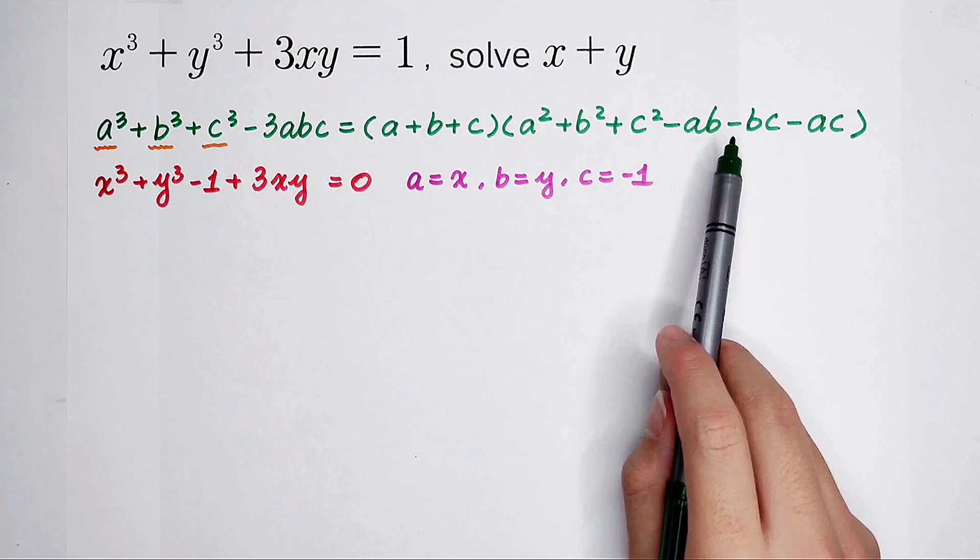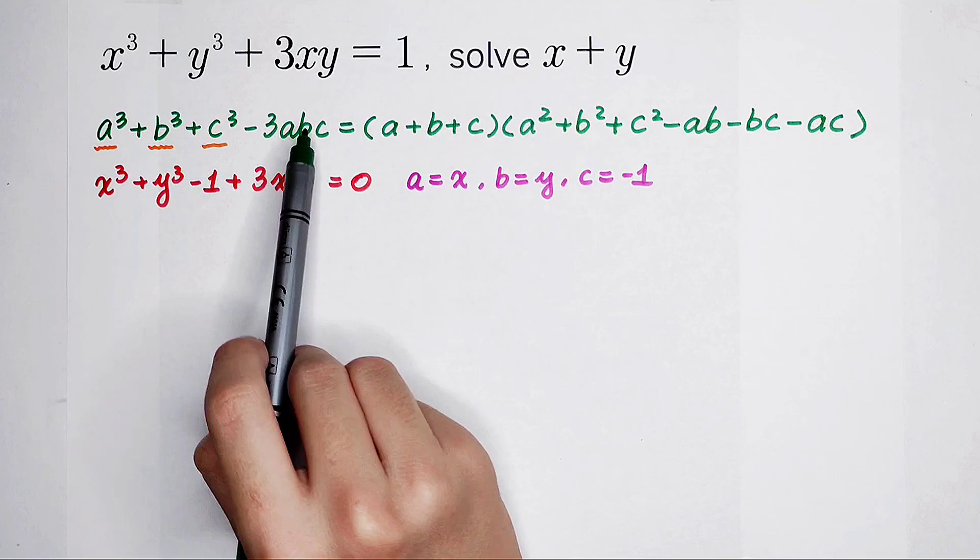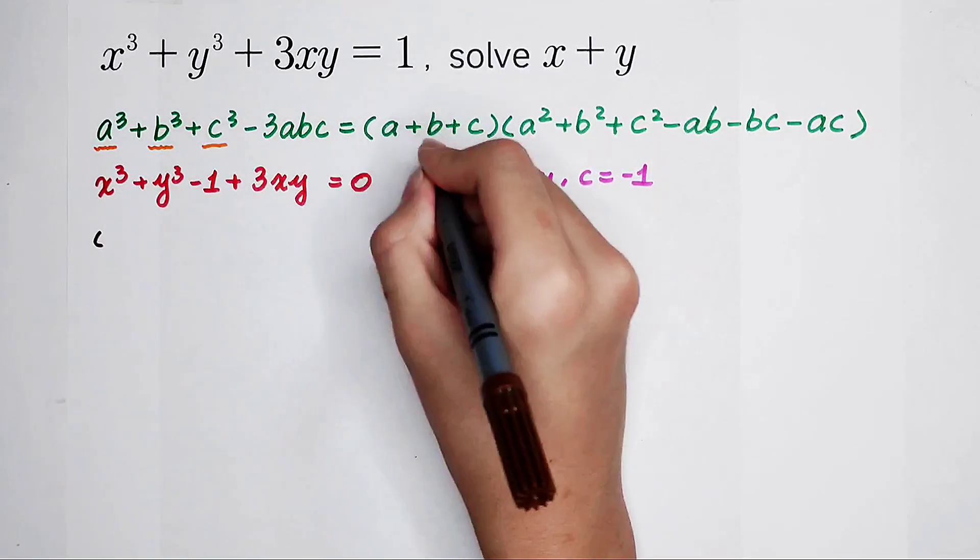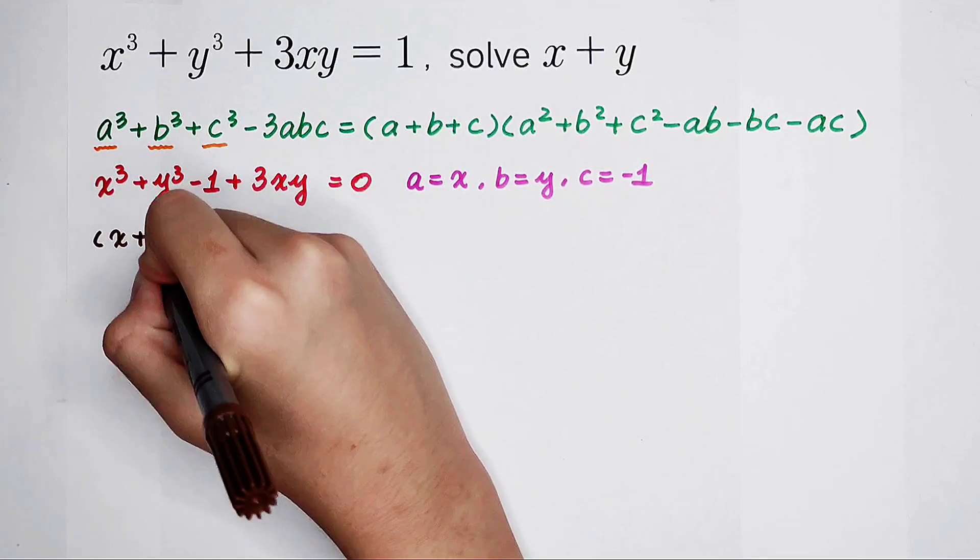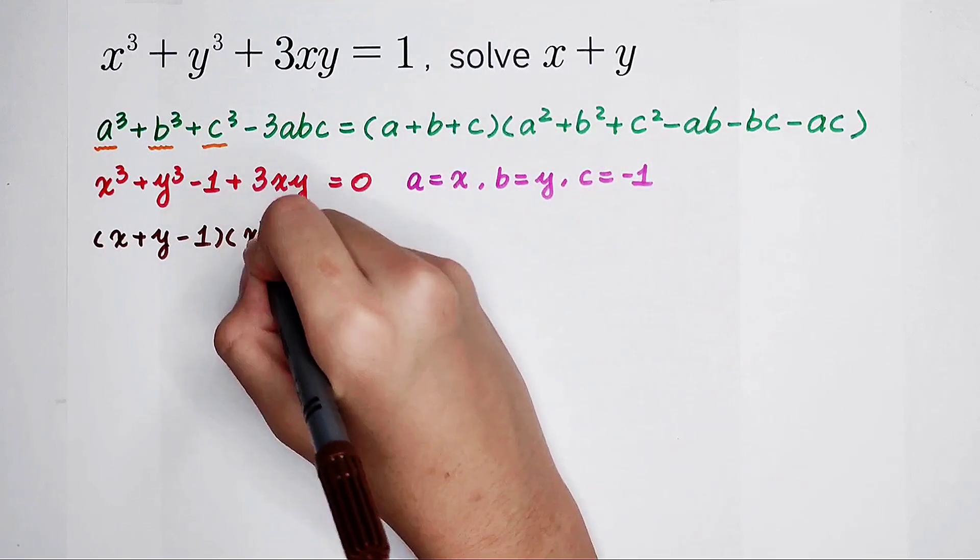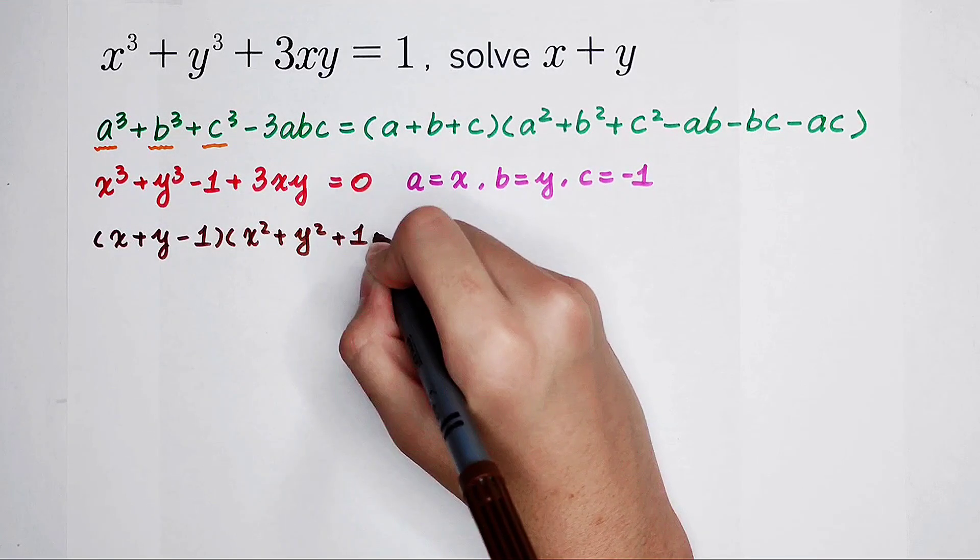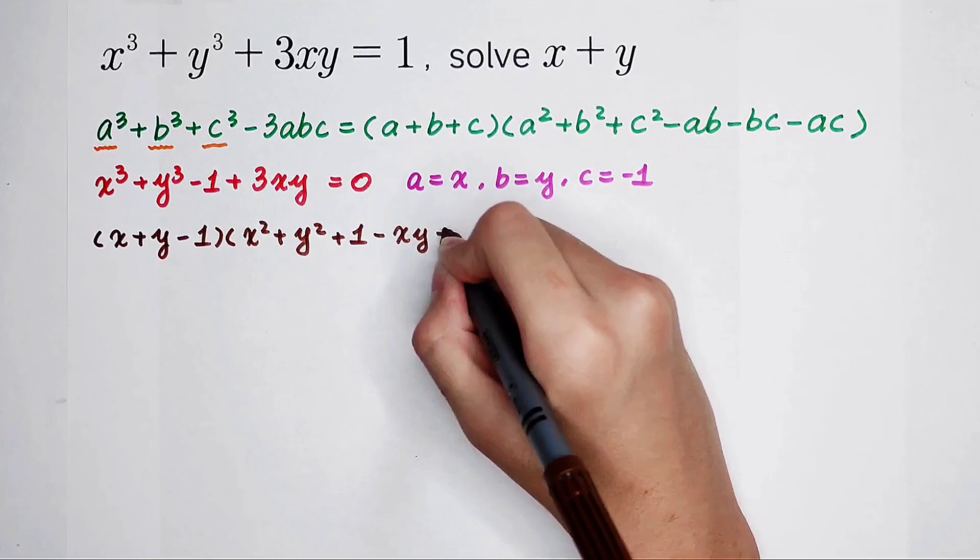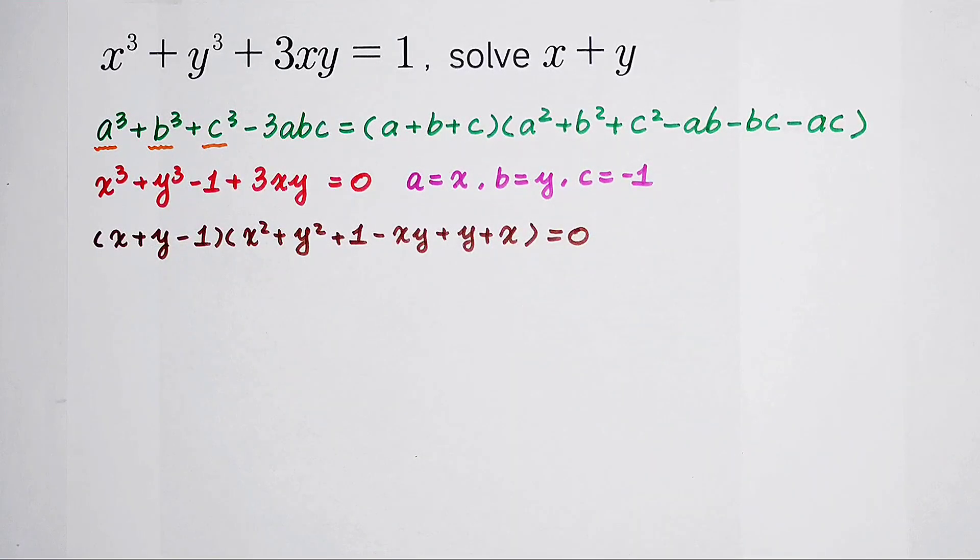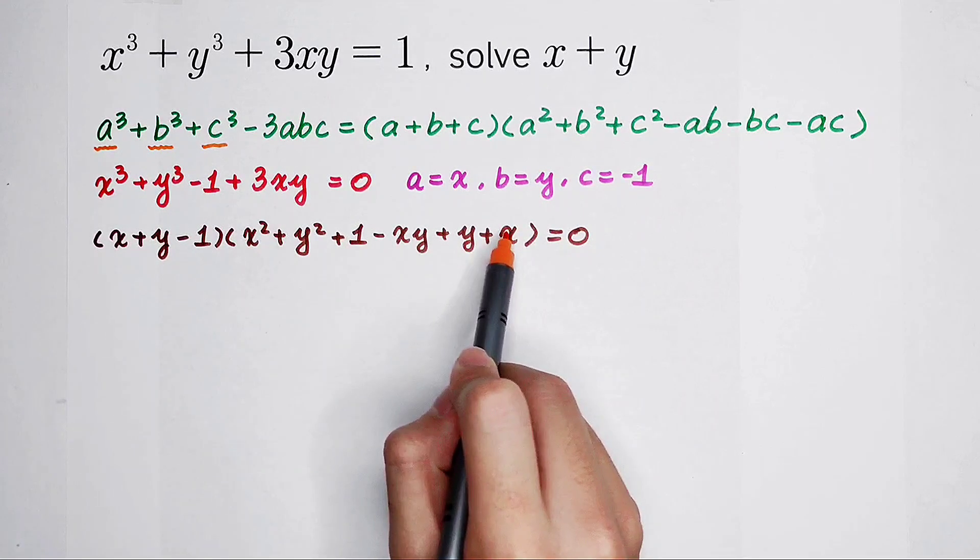The factor is just this. So the left hand side can be written as (a plus b plus c) which is x plus y plus (negative 1), times (a squared is x squared, b squared is y squared, this is 1, minus xy, plus y, plus x). It equals 0. So I can say, x plus y minus 1 equals 0, or this factor can equal 0.